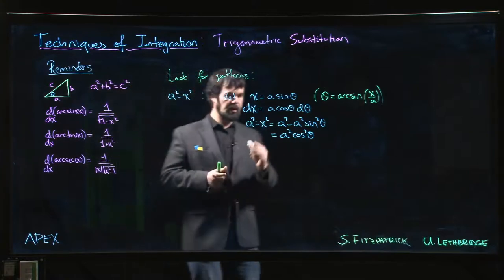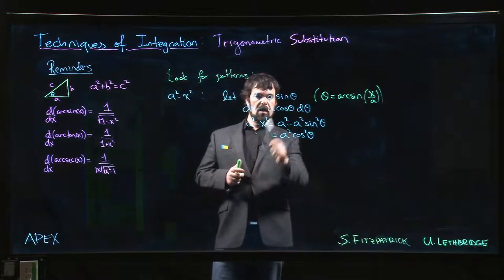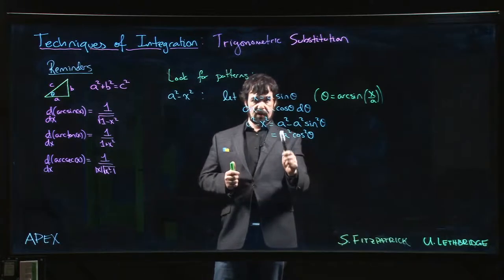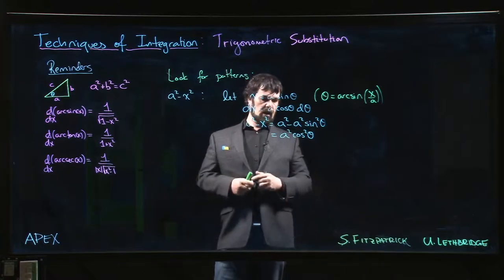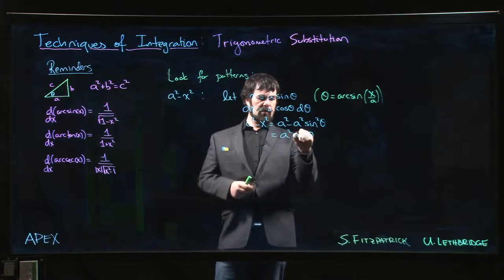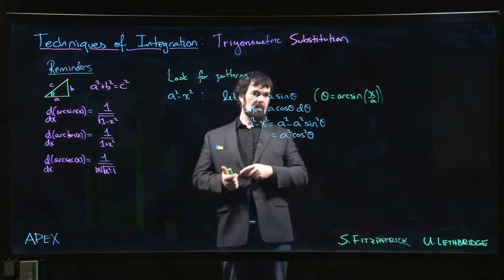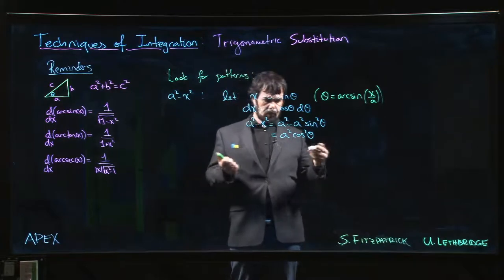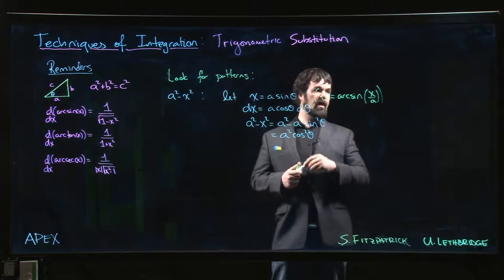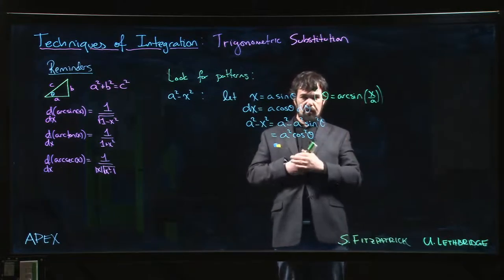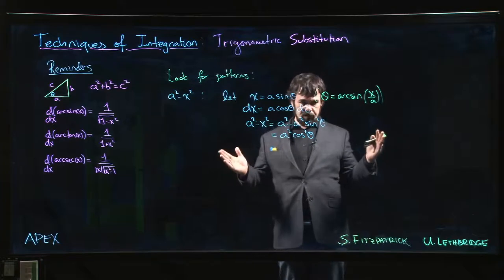One of the reasons why these trig substitutions are useful is they do allow us to eliminate radicals. Because if I had something like this under a square root, making this substitution takes this and turns it into something that's a perfect square. So I can take that square root. Of course, you might be worried about absolute value, square root of cos squared.